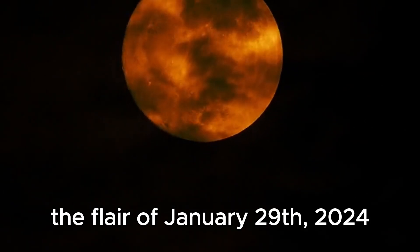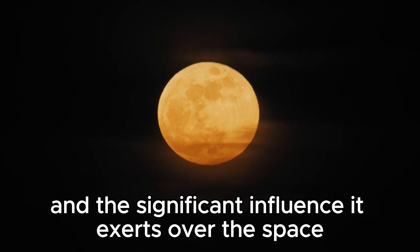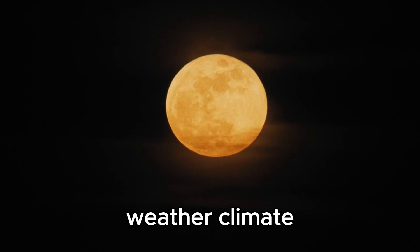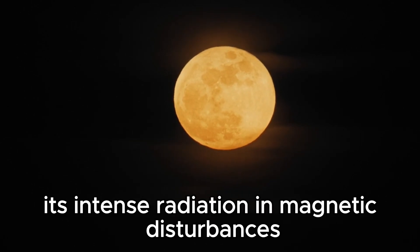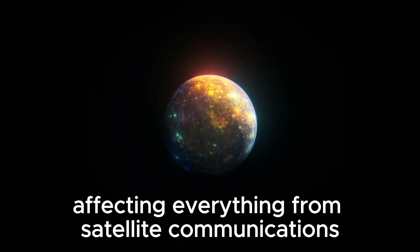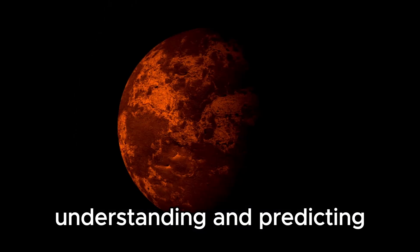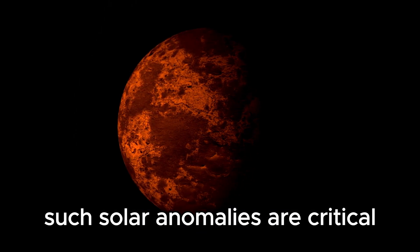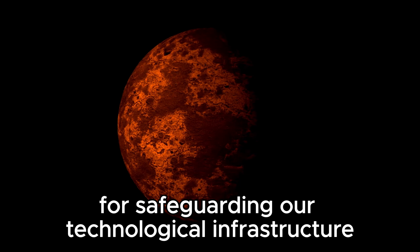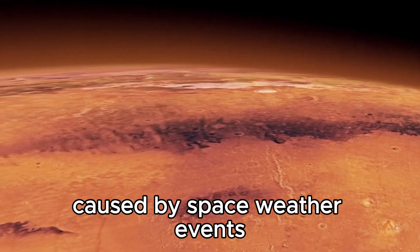The flare of January 29, 2024 serves as a piercing sign of the sun's inherent volatility and the significant influence it exerts over the space weather climate. Its intense radiation and magnetic disturbances have broad implications affecting everything from satellite communications to power grids on Earth. Understanding and predicting such solar anomalies are critical for safeguarding our technological infrastructure.